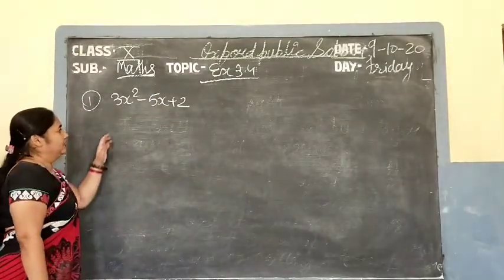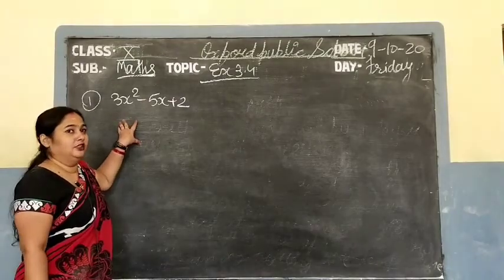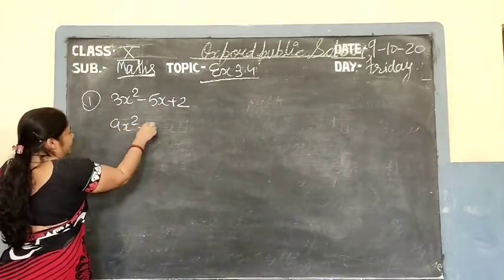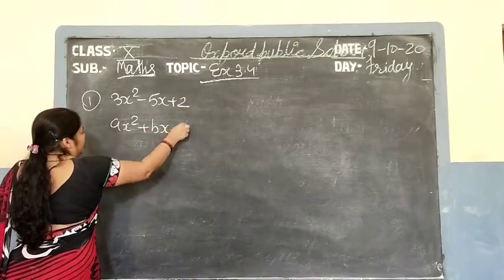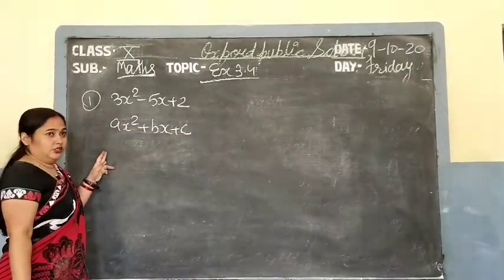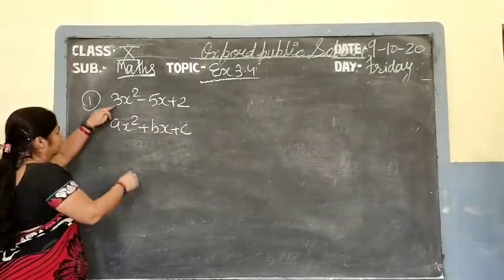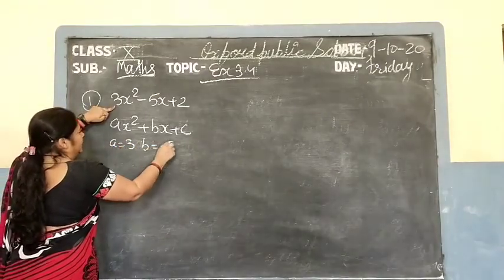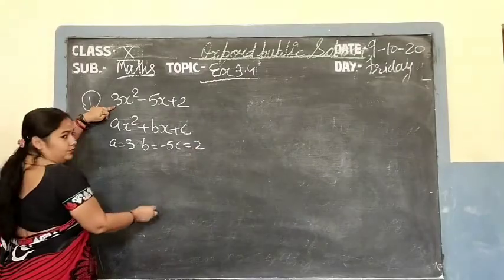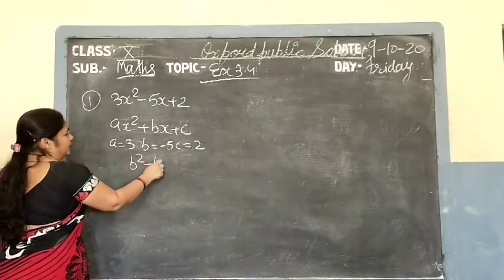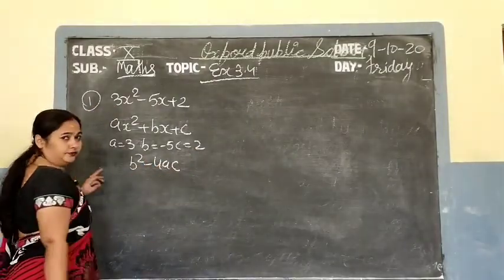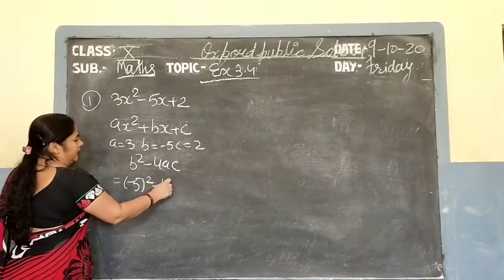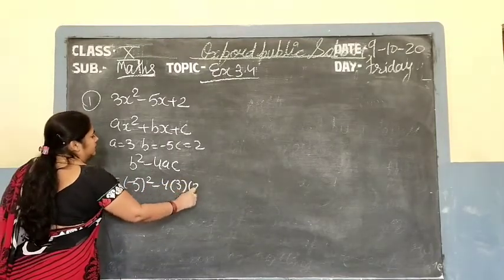In the perfect square method, first check if roots exist or not. Compare this with the standard form a square plus bx plus c. Compare: a equals 3, b equals minus 5, and c equals 2. Then calculate b square minus 4ac: minus 5 square, minus 4 times 3 times 2.